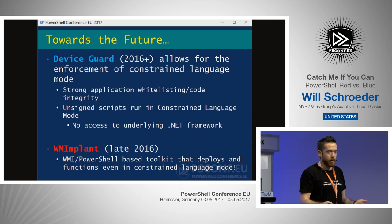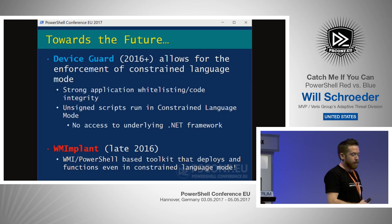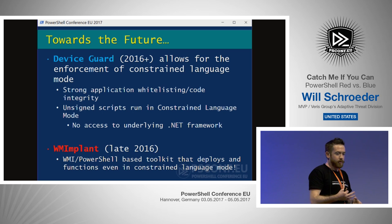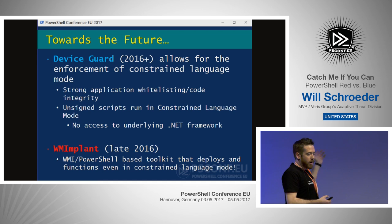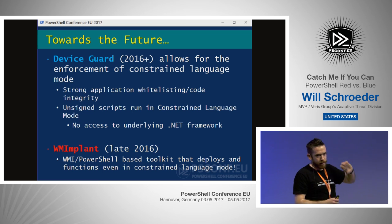Device Guard allows enforcement of Constrained Language Mode, which locks things down so we can't access the Win32 API or a large portion of the underlying .NET framework — though you can still use all your normal cmdlets and signed Microsoft functions, so it doesn't really impede usability for most people. From the offensive side, Constrained Language Mode breaks nearly everything in PowerSploit and nearly everything I've written. With Device Guard and the new hypervisor-based security model in Windows 10, there's theoretically no way to disable this.